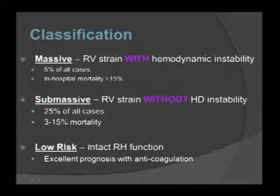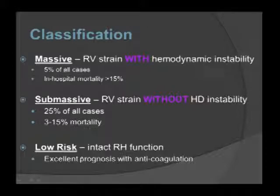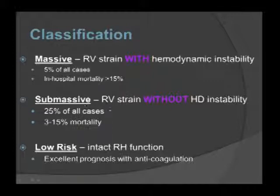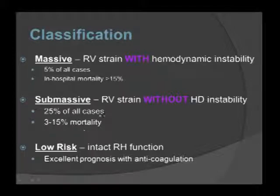In the lowest risk group with no hemodynamic instability, anticoagulation alone gives an excellent prognosis. However, some patients will decompensate, and the evidence shows that right ventricular strain is the distinguishing factor between low-risk and submassive patients. This submassive category represents about a quarter of all cases and carries increased mortality.